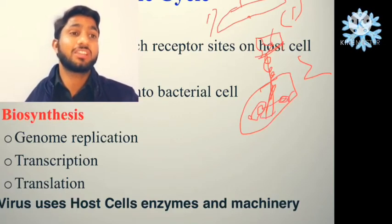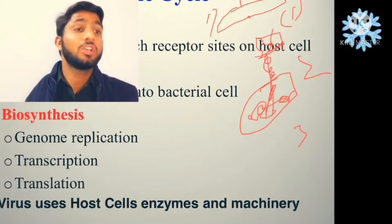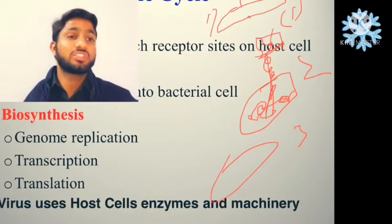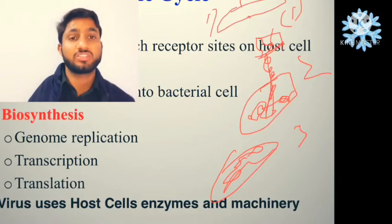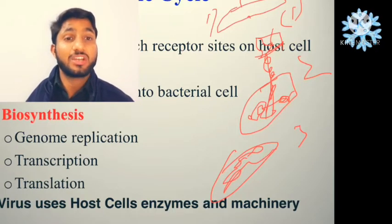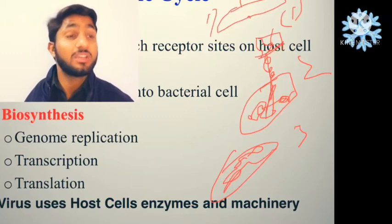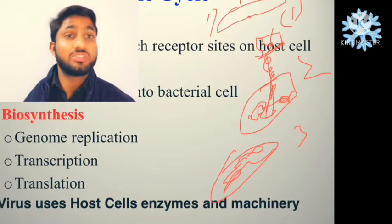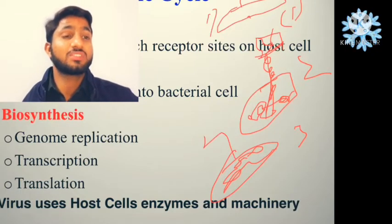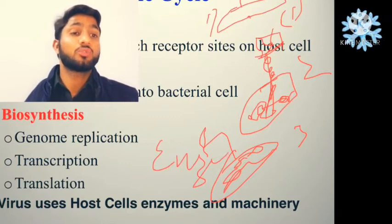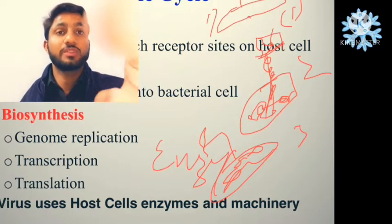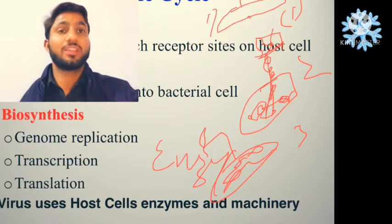Inside the bacterial synthetic machinery, a copy of the viral genome is made. The viral genome's replication starts, followed by transcription and then translation, and viral proteins are produced. The virus uses the whole cell's enzymes and machinery — the bacterial enzymes, synthetic machinery, and nutrients — to create proteins.